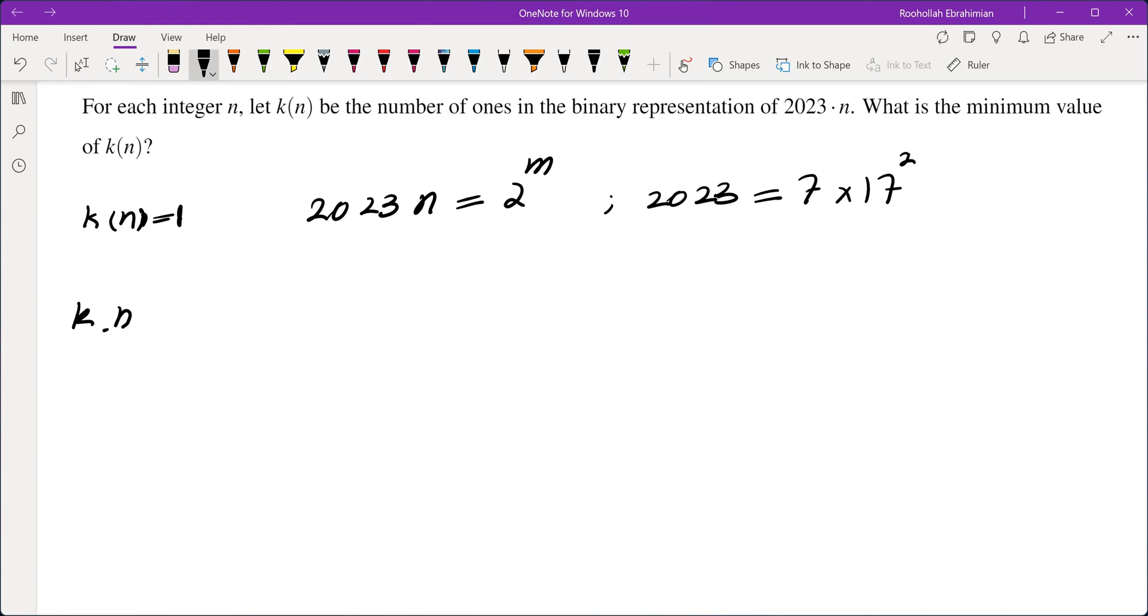How about k(n) equals 2? Is it possible for k(n) to be 2? What that means is that we need 2023n to be equal to 2 to the power of m, which is again the leading digit of 1, plus, and because this is odd, we can add 1 here. Now, why can we make n odd? Because if n is even, you can just basically ignore all the zeros that the number 2023n ends with. So for the rest of the solution, we're going to assume that n is in fact odd.